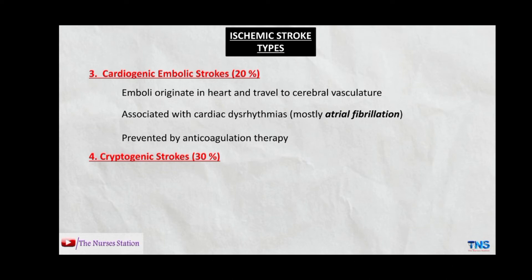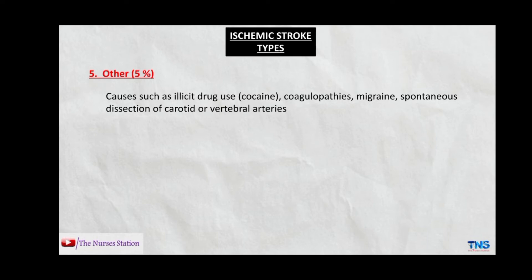The fourth type is cryptogenic strokes, accounting for 30% of ischemic strokes — these are strokes with no known cause. The last type accounts for 5% of ischemic strokes and can result from causes like illicit drug use such as cocaine, coagulopathies — diseases resulting in excessive bleeding or clot formation — migraines, and spontaneous dissection of the carotid or vertebral arteries. Dissection means a tear in the artery wall that allows blood to leak between the layers of the artery and separate them.